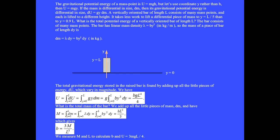The gravitational potential energy of a mass point is u equals mgh, but using coordinate y rather than h, then u equals mgy. If the mass is differential in size dm, then its gravitational potential energy is differential in size: du equals g·y·dm.